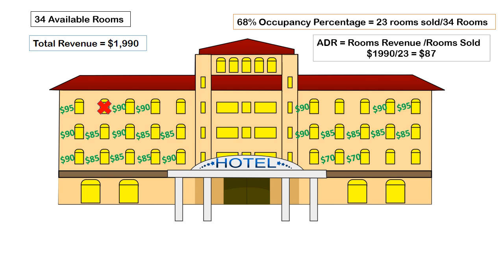Now let's move to our ADR, which is our average daily rate. Here we take our room's revenue, which was $1,990, and we divide it by the rooms sold. Now we have $87 per room. But again, keep in mind this number does not account for those rooms that are sitting empty. And as you recall, our product is perishable — meaning if we don't sell our product one night, we'll never get that night back. We cannot sell that again.